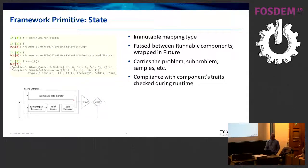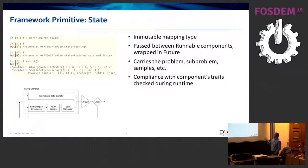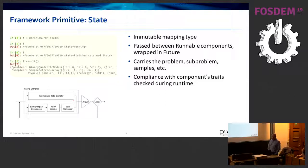The other primitive of importance is the State, which is something like an immutable mapping type wrapped in a future. It's passed between Runnables and carries whatever you need between Runnables to solve your problem — at minimum, that's a problem and samples, or sub-problem and sub-samples. Compliance of input and output states is checked at runtime by each Runnable.